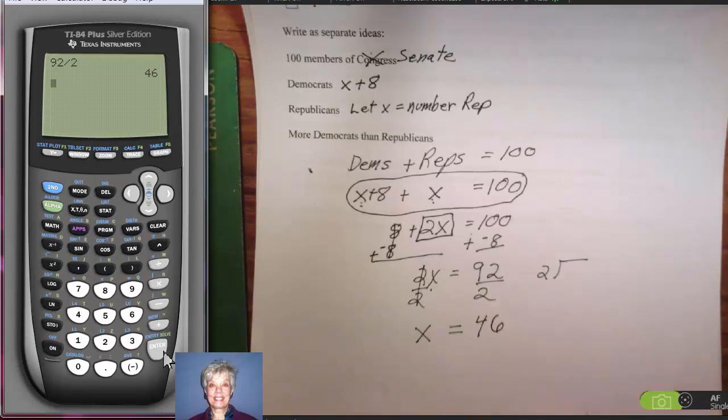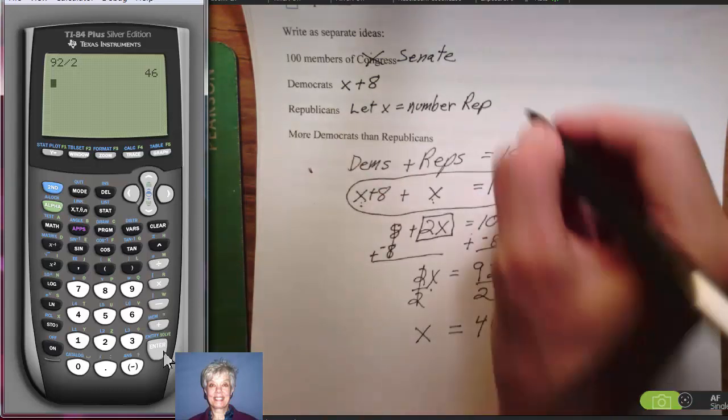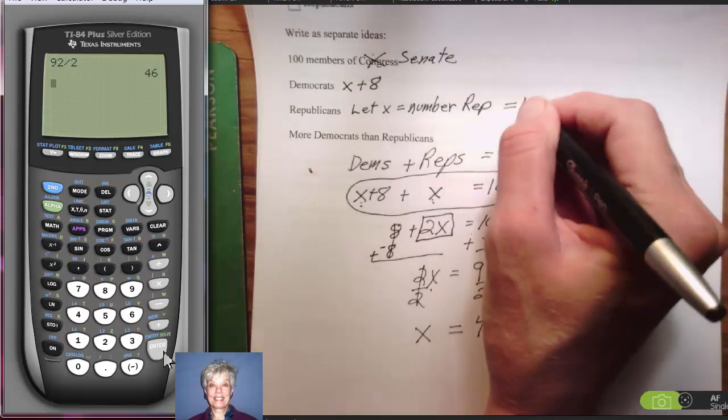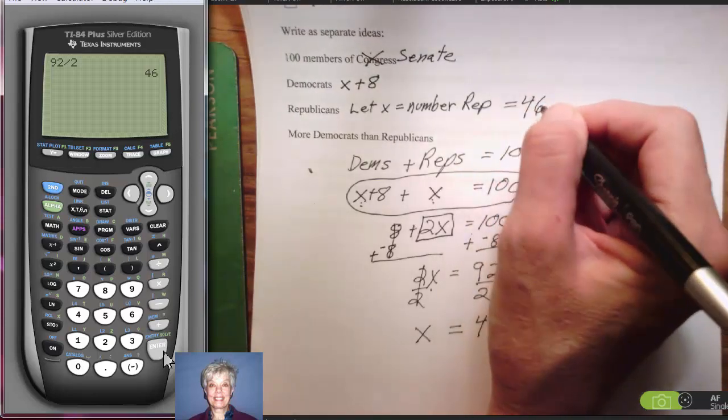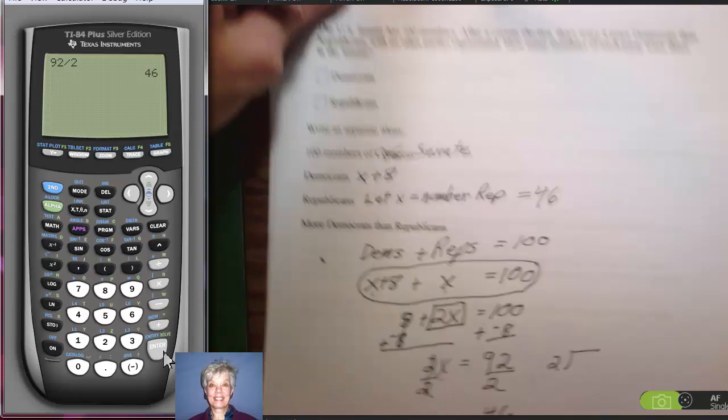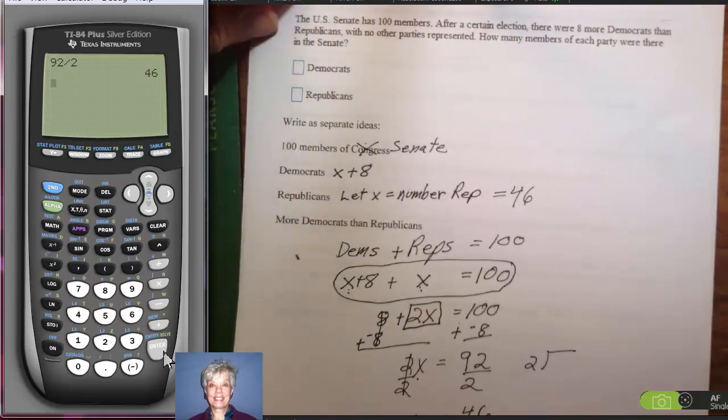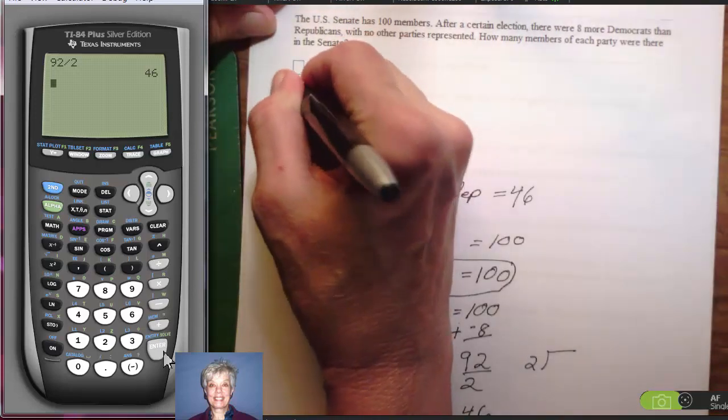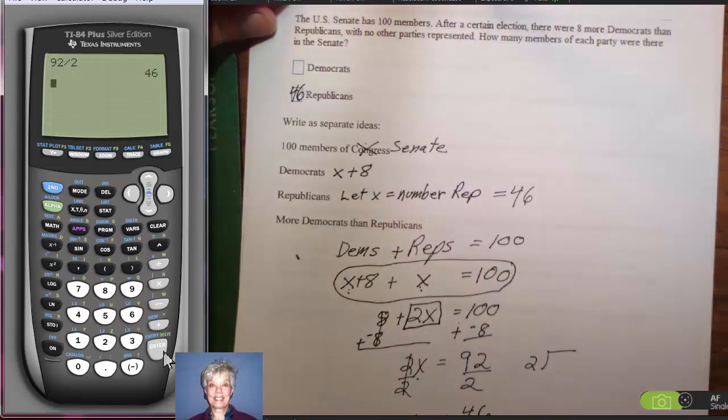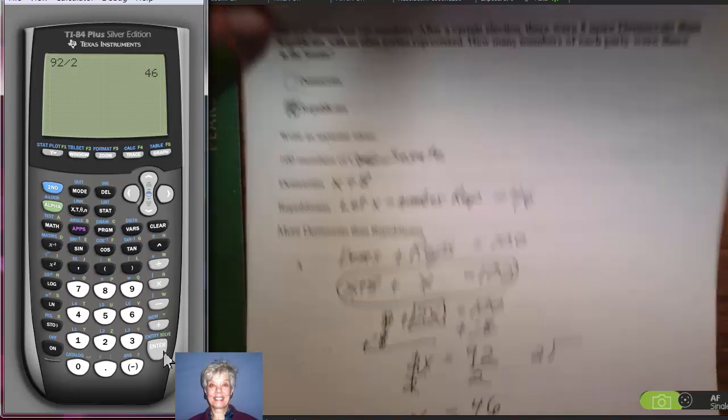Now, because it's a story problem, I have to look back at the original statement of what I let X equal. Alright, X is the number of Republicans, so there are 46 Republicans. I'm going to fill out the answer box right here. There are 46 Republicans. If I were actually in my math lab, I would type 46 in the answer box.